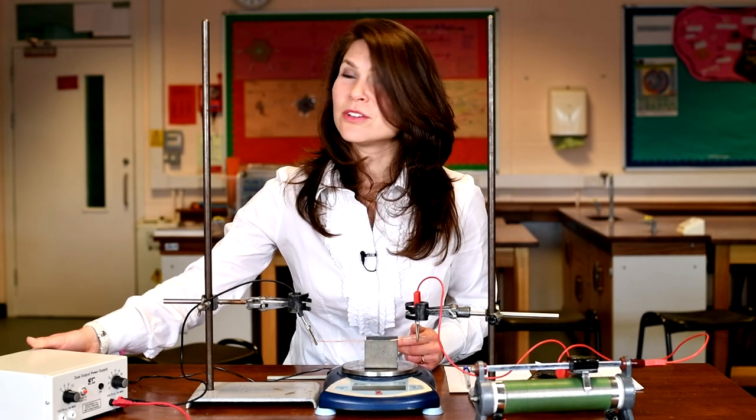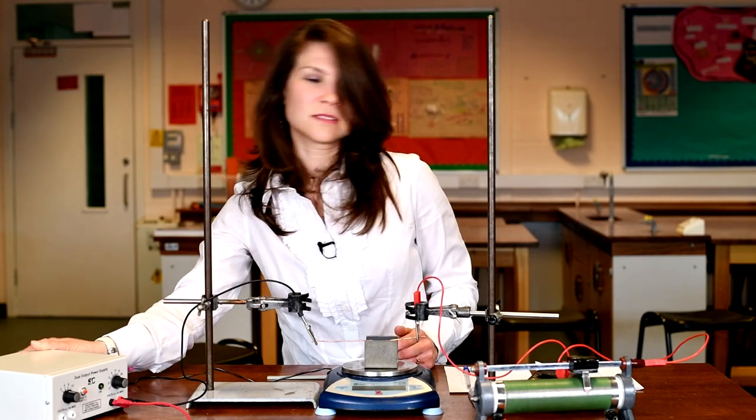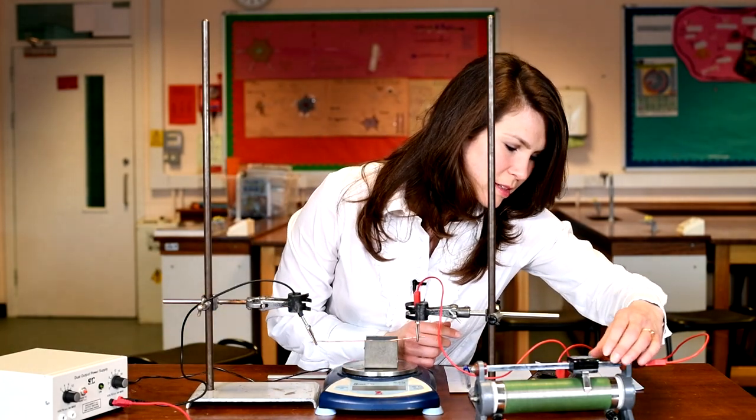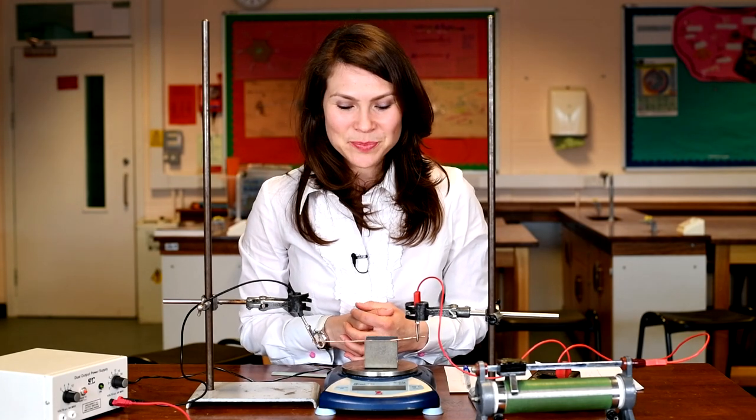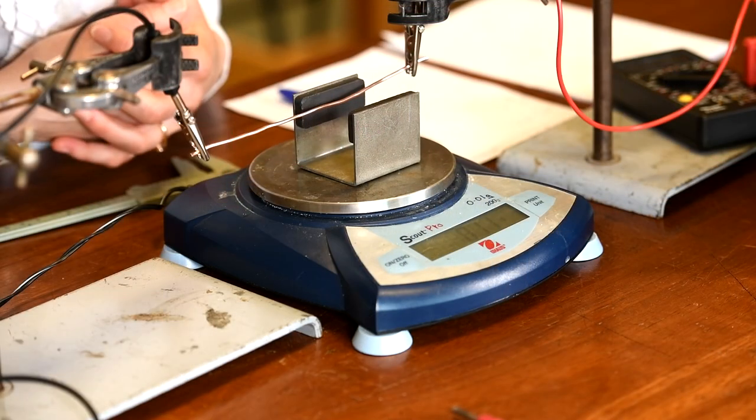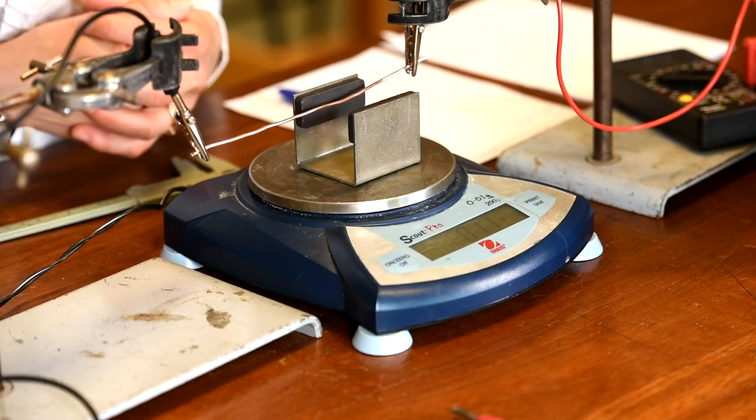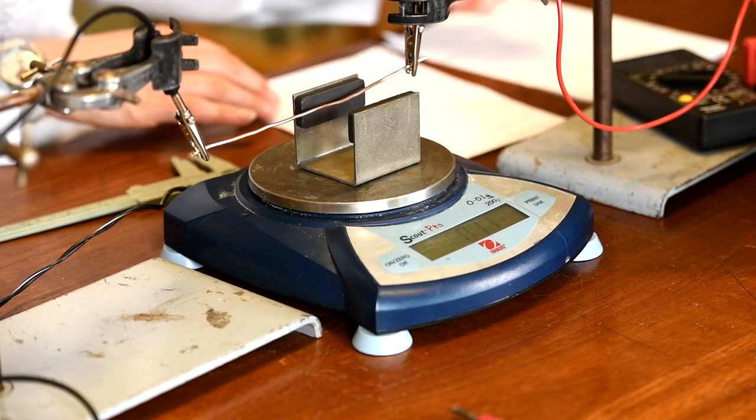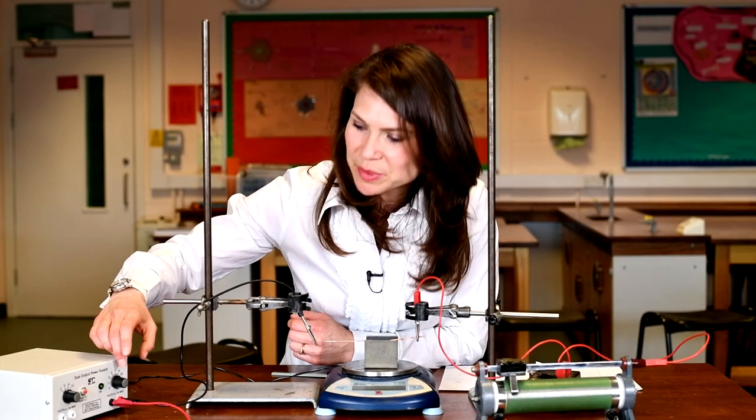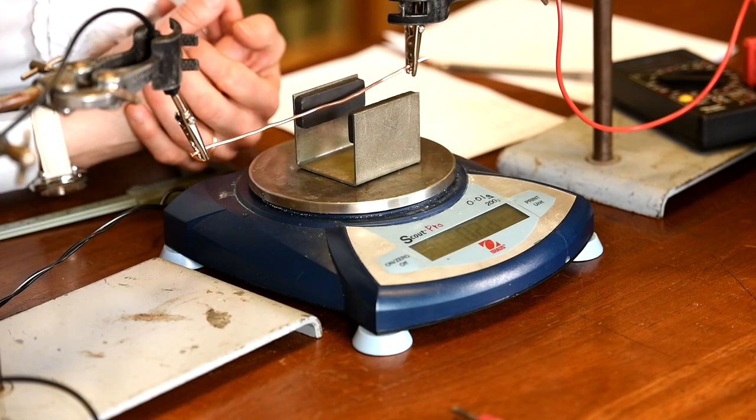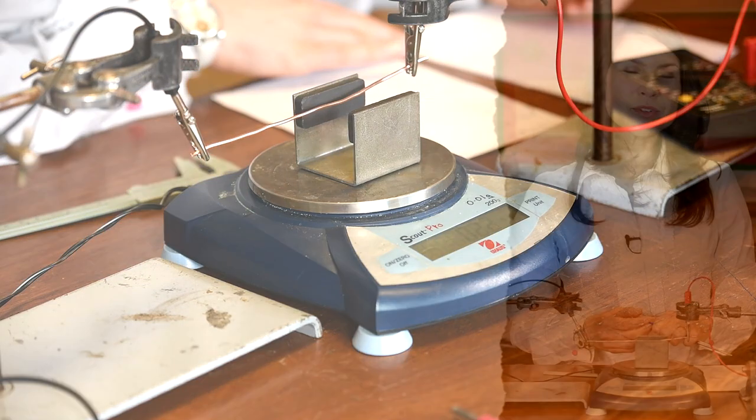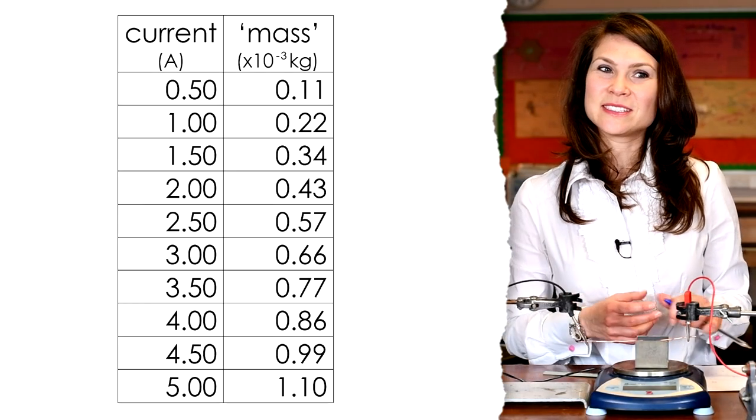Turn the power on and run the current through the wire. So we've varied the variable resistor so that we have a current of 0.50 amps, and we can take our reading on the scale as 0.11 grams. Now we're going to increase the current to 1 amp. We have a current of 1 amp and the reading is 0.22 grams. We've gone all the way to 5 amps, and here is our set of data.